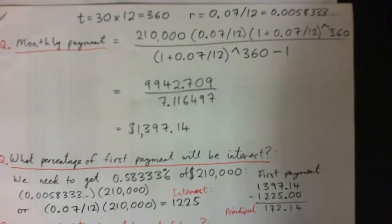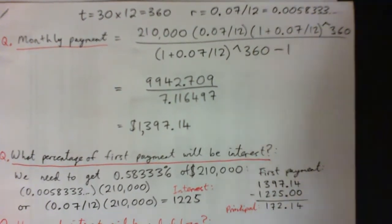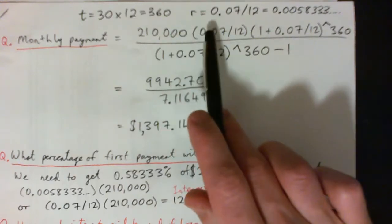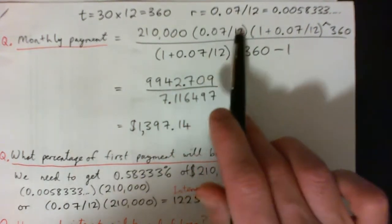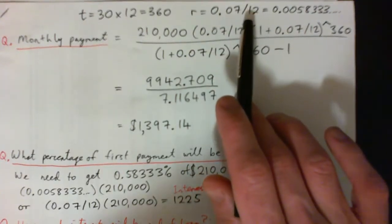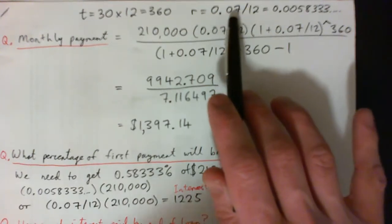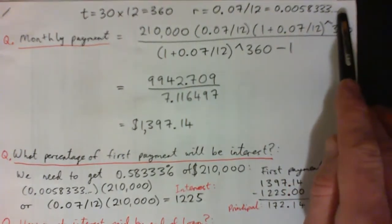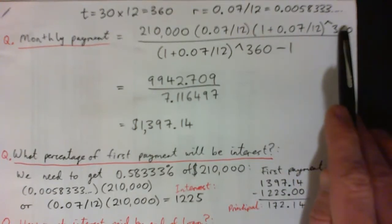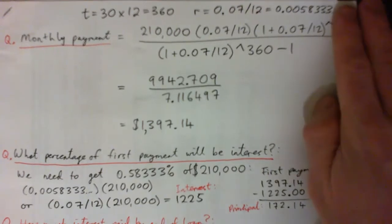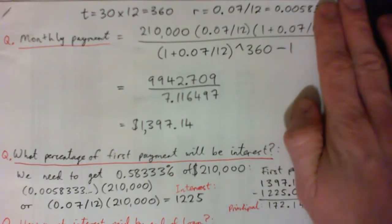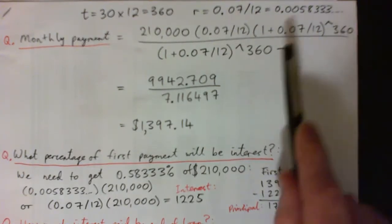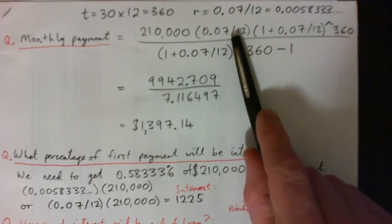To get the monthly payment, you get the formula from your formula sheet. It says monthly payment equals the amount borrowed times the rate over 12 — or the monthly interest rate. Since we're making monthly payments, we need to take the annual interest rate of 7% and divide by 12. That gives a long decimal, so if you choose to use that decimal, use a lot of decimal places because it's being raised to the power of 360. The most accurate way is to just leave it as 0.07 over 12 in your calculator.